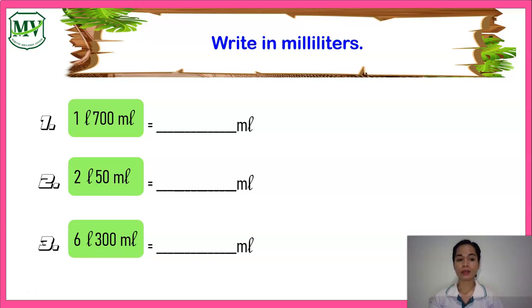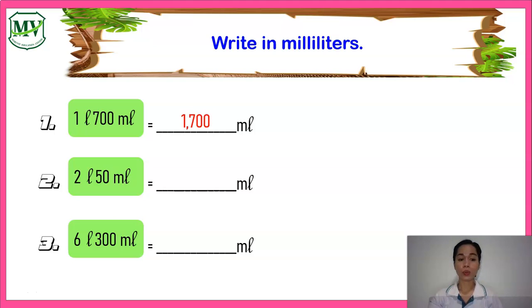There are three items. Let's start with number one: one liter and seven hundred milliliters. The correct answer for number one is one thousand seven hundred milliliters. Next, number two: two liters and fifty milliliters. The correct answer is two thousand fifty milliliters.